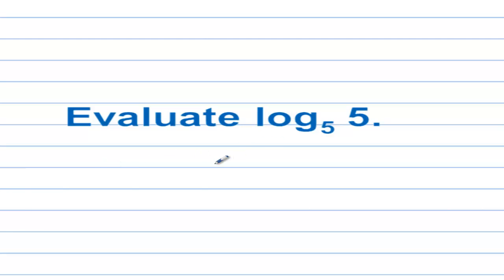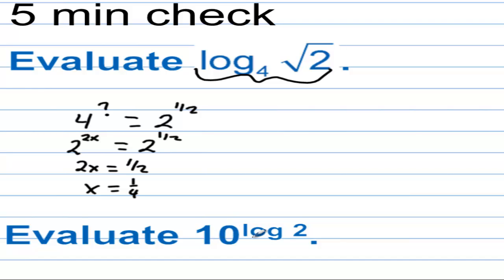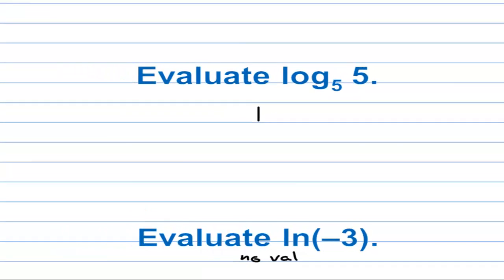Log base 5 of 5 is 1, since 5 to the first power is 5. When both bases are the same — for example, base 10 in the exponent and base 10 in the log — those cancel each other out and the answer is 2. On the last one, there is no value. We cannot take the natural log of a negative value, and you can't take the natural log of 0 either.